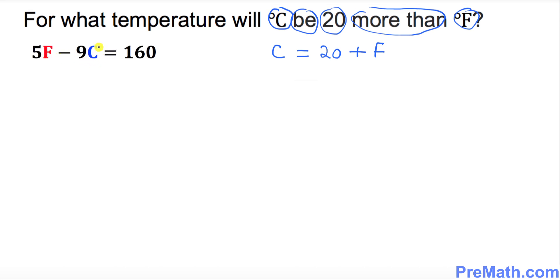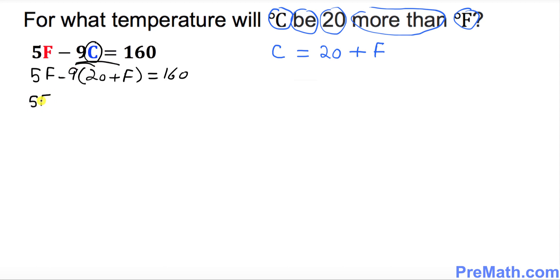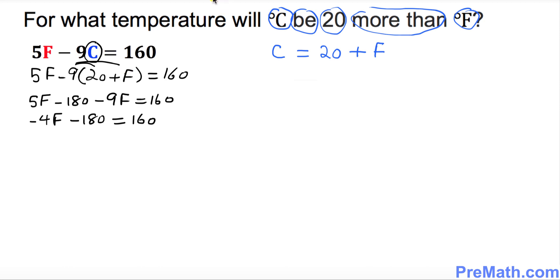Here's the formula we will be using. Wherever we see C, we replace it with 20 plus F. So we get: 5F minus 9 times (20 plus F) equals 160. Let's distribute: that gives us 5F minus 180 minus 9F equals 160. Combining the F terms gives us negative 4F minus 180 equals 160.